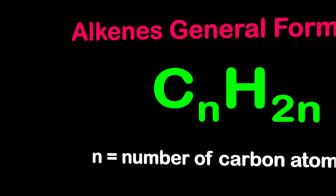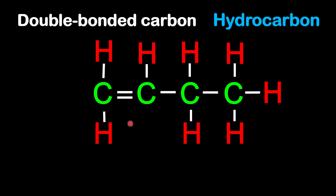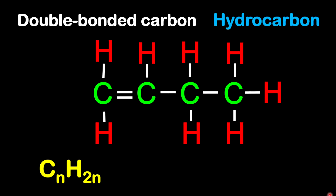To be double-bonded carbon to carbon means that between two carbon atoms there must be a double bond. This double bond is shown here, so in this example we have only one double bond. To be a hydrocarbon means the compound consists of carbon and hydrogen. Applying the general formula CnH2n means you have twice as much hydrogen as carbon — so with four carbon atoms we must have eight hydrogen atoms.